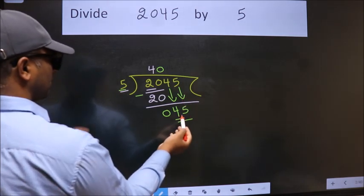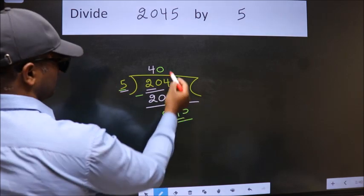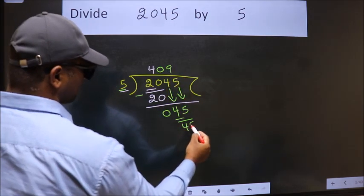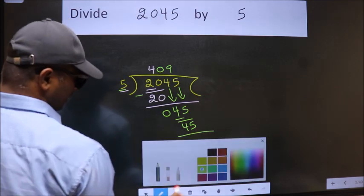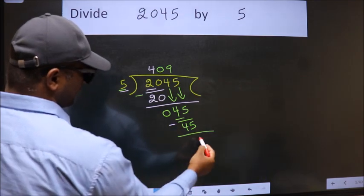When do we get 45? In the 5 table, 5 times 9 is 45. Now we subtract. We get 0.